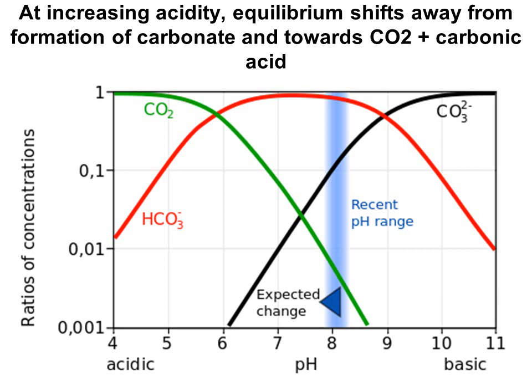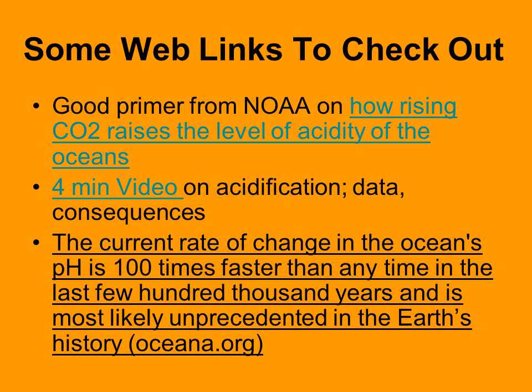pH is a measure of free hydrogen ions — high numbers mean alkaline, low numbers mean acidic — and unfortunately we're heading toward more acidic. This means less carbonate available for sea life. The ocean has moved about 30% in acidity. One proposed solution is to dump bicarbonate into the ocean to prevent this imbalance, though it doesn't look feasible as a global solution. The current rate of change of ocean pH is 100 times faster than at any time in the last few hundred thousand years — quite possibly unprecedented in Earth's history.